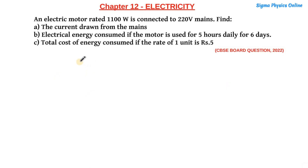Hello students, welcome back. Let's take up another question from the electricity chapter. This question is related to the commercial unit of electrical energy. An electric motor rated 1100 watts is connected to 220 volt mains. Find: the current drawn from the mains, the electrical energy consumed if the motor is used for five hours daily for six days, and the cost of energy consumed if the rate of one unit is rupees five.